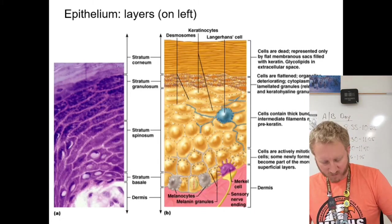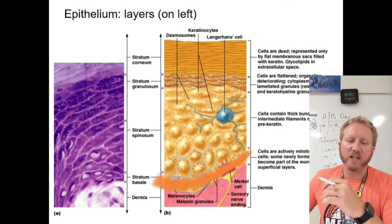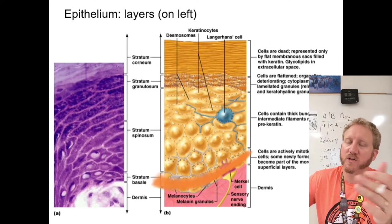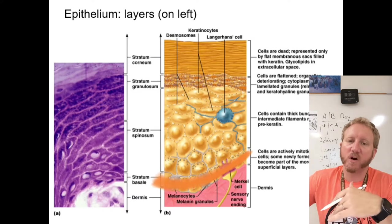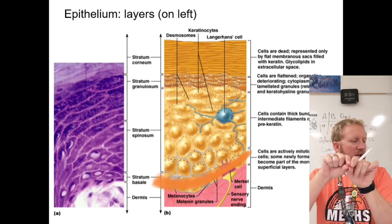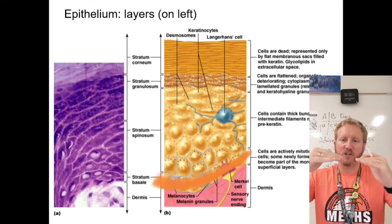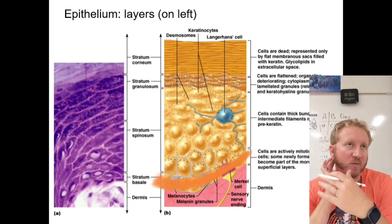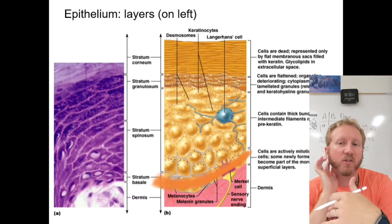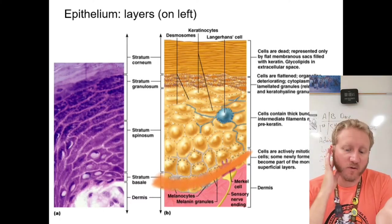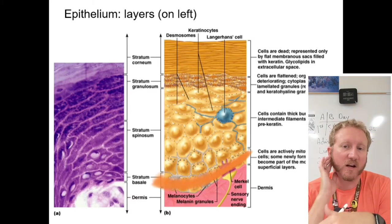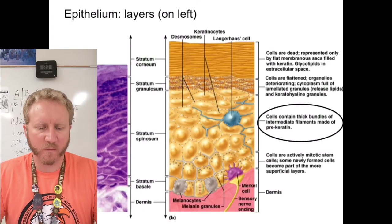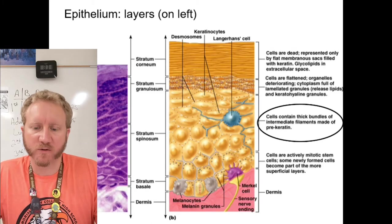The stratum basale is the mitotically active layer — this is where the epidermis gets replaced every six to eight weeks. As this base level divides, it pushes cells up into higher levels. It's attached to the dermis, anchoring the epidermis to it. These are the youngest cells — dividing now and in about six weeks they'll flake off.